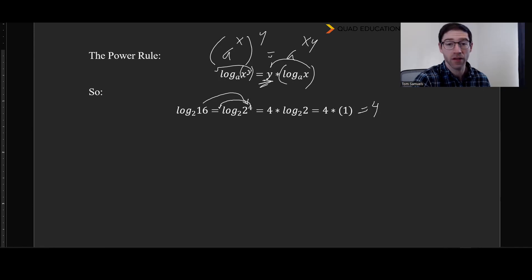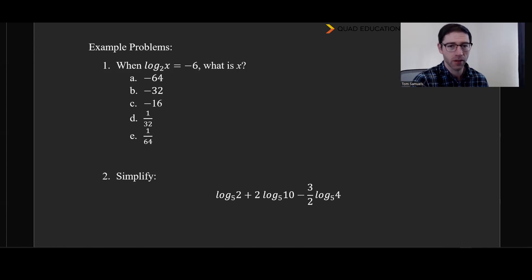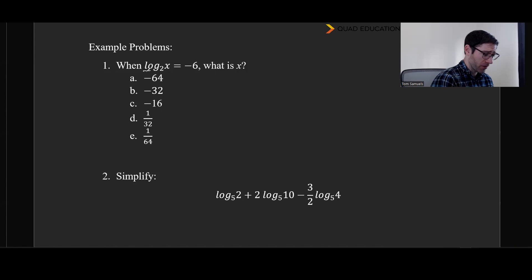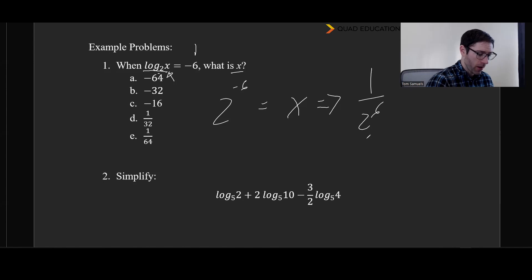Those are our logarithm rules you'll see consistently on these tests. Now let's look at some example problems. The first one is multiple choice and the second is free response — you don't really need a calculator, but ACT is all calculator so feel free. For problem 1: log base 2 of x equals negative 6, what is x? The base is 2, negative 6 is our exponent, and x is our output. This is effectively an exponent question phrased as a log question. A negative exponent means 1 over 2 to the sixth power, and 2 to the sixth is 64, so x equals 1 over 64.